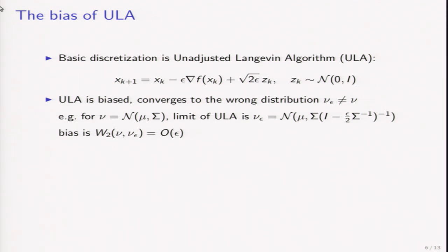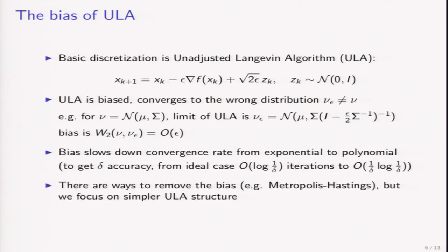The unadjusted Langevin algorithm, or ULA, is the following algorithm — it looks like a noisy version of gradient descent. But this is in fact biased, which means it converges to the wrong distribution. This bias exists even for a simple case such as a Gaussian target measure. In this case, we can compute what the limit is explicitly, and we see that there is a bias of order one. This bias is bad because it slows down the convergence rate from exponential to polynomial. Of course, there are ways to remove the bias, such as Metropolis-Hastings.